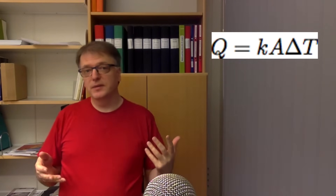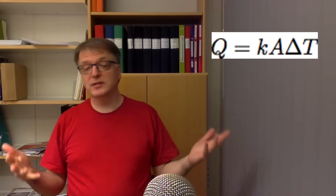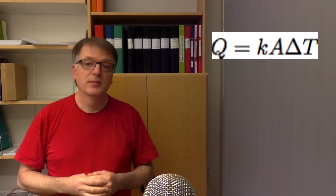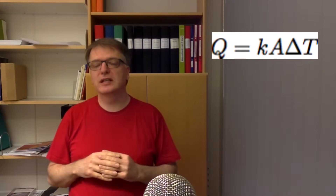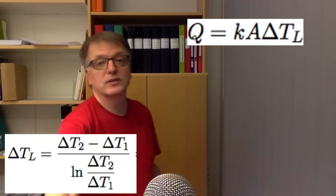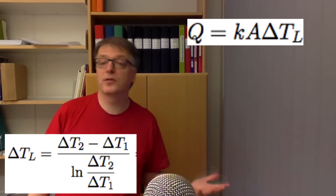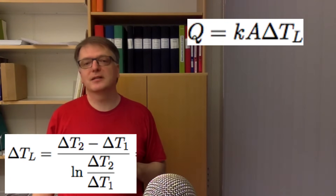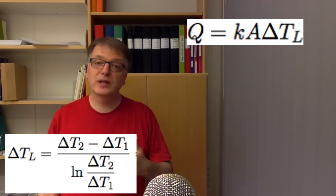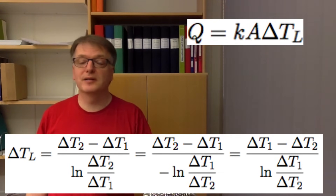Since this temperature difference may change along the heat exchanger, if you have essentially constant heat capacities on both sides — not necessarily the same fluxes — you can derive a logarithmic mean temperature difference. That expression is: ΔT₂ minus ΔT₁ divided by the natural logarithm of ΔT₂ divided by ΔT₁, which can also be written as ΔT₁ minus ΔT₂ divided by the natural logarithm of ΔT₁ divided by ΔT₂.